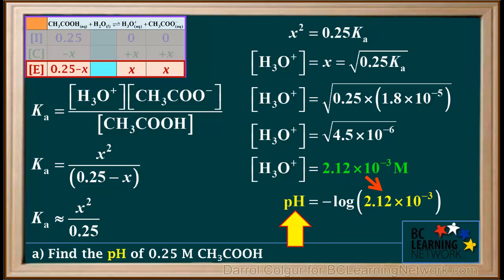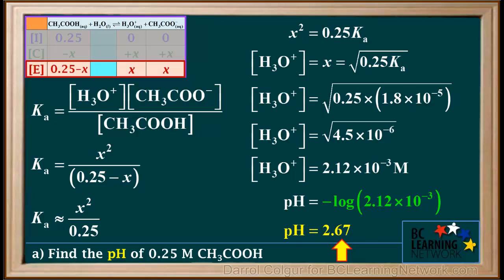We're asked for the pH. The pH is the negative log of the hydronium ion concentration, which is the negative log of 2.12 times 10 to the negative 3. That comes out to 2.67366, which we round to 2.67 to give two decimal places — or two significant figures — in our final answer. The pH of 0.25 molar ethanoic acid is equal to 2.67.